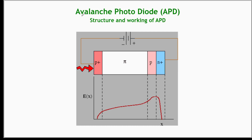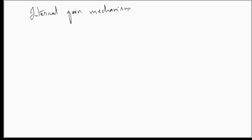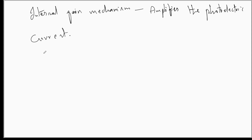Hello, welcome back. In this video we will discuss the avalanche photodiode, its structure and working. The avalanche photodiode works on a unique principle called internal gain mechanism. This mechanism leads to the amplification of photoelectric current, thereby the APD can detect low intensities of light.